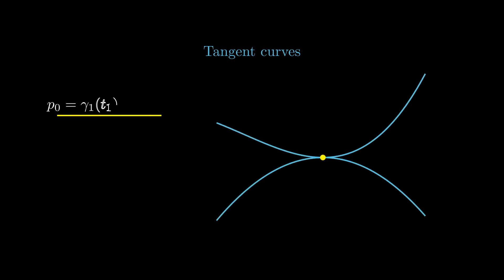Let's begin with some definitions. We say that two smooth regular curves, gamma1 and gamma2, are tangent at a point p0 corresponding to the time parameters t1 and t2 for gamma1 and gamma2 respectively, if the velocity of gamma1 at time t1 is parallel to the velocity of gamma2 at time t2.